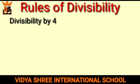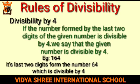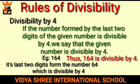Next is divisibility by 4. If the number formed by the last two digits of the given number is divisible by 4, we say that the given number is divisible by 4. For example, 164 — its last two digits form the number 64, which is divisible by 4. Thus we can say 164 is divisible by 4.